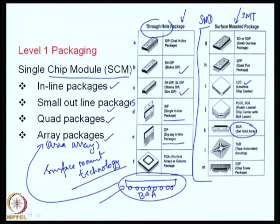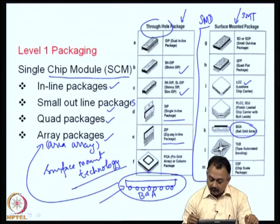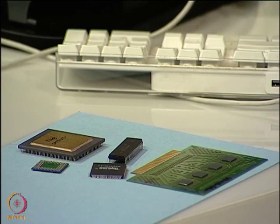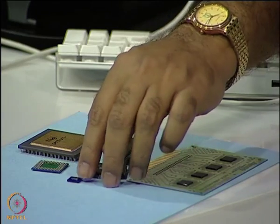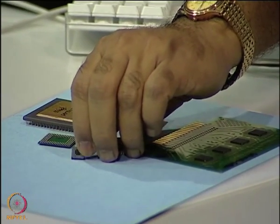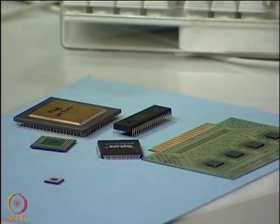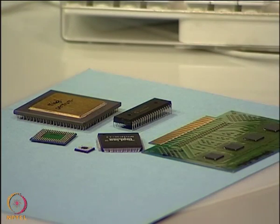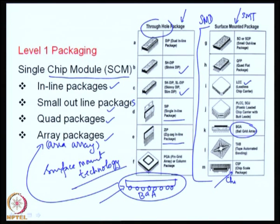We also have tape automated bonding (TAB) as a method of interconnection to the substrate, and the chip size package (CSP) — a very tiny package with solder balls at the bottom, but much smaller device volume compared to a BGA. These are the current technologies. The BGA and chip size package are very current technologies and we are going to see more of those.